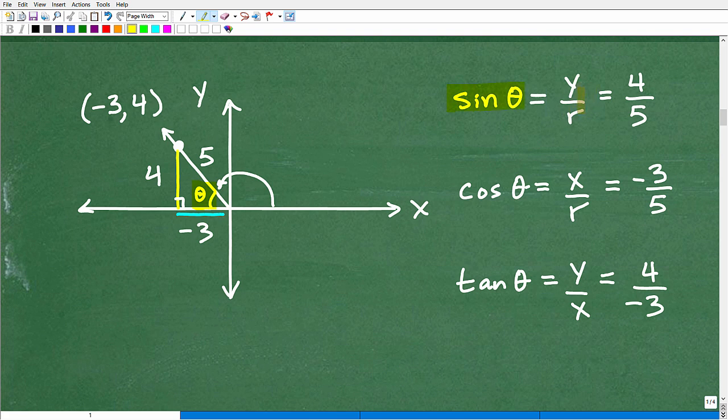So let's just go ahead and just follow the formula. y over r, it's going to be positive 4 over 5. So that's it. The sine of this angle here is 4 fifths. The cosine is x over r. So that's negative 3 over 5. So negative 3 fifths is the cosine. And the tangent is y over x. So y is 4, x is negative 3. So 4 over negative 3 is our tangent.